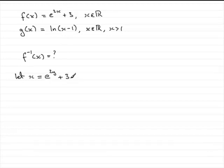And now what we've got to do is rearrange this to make y the subject. So the first thing we need to do is take away 3 from both sides. So that gives us e to the 2y equals x minus 3.